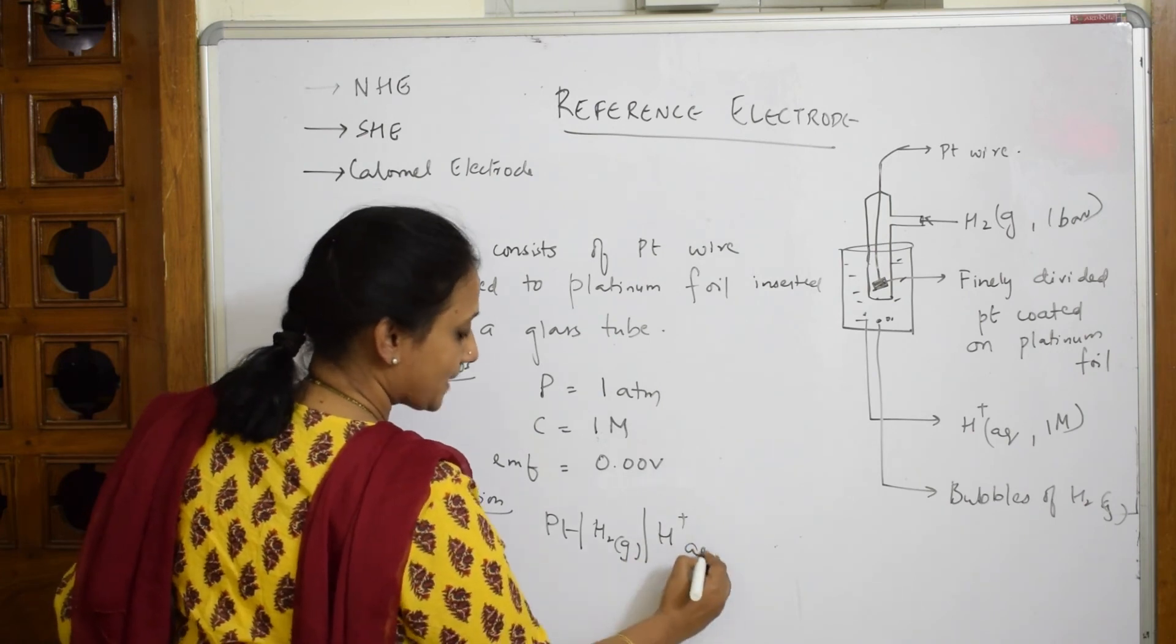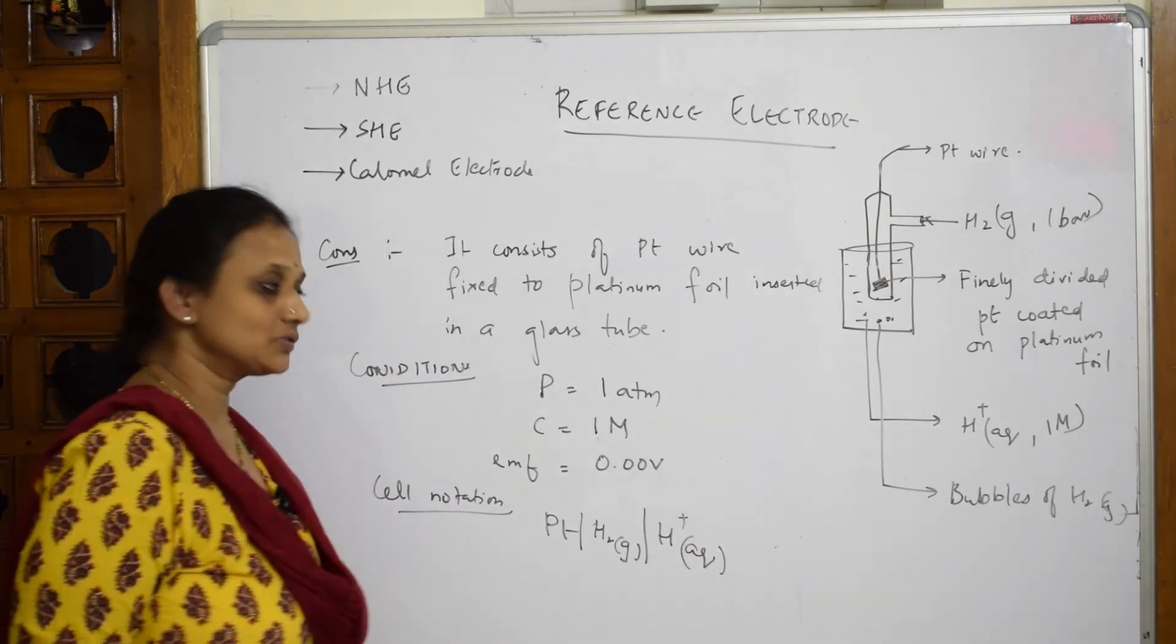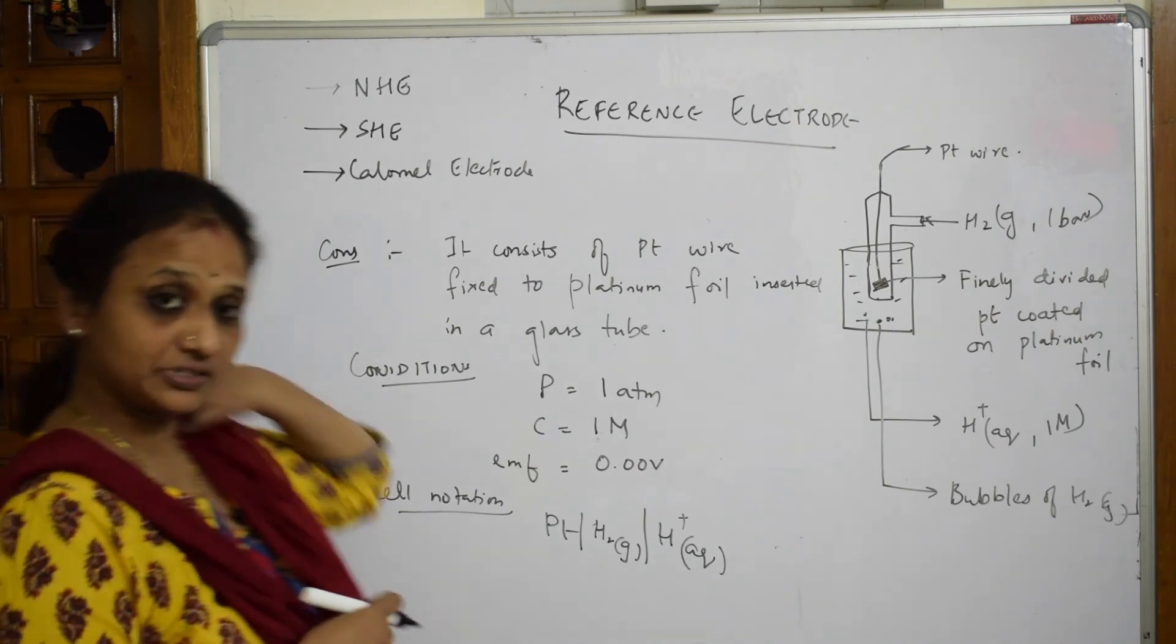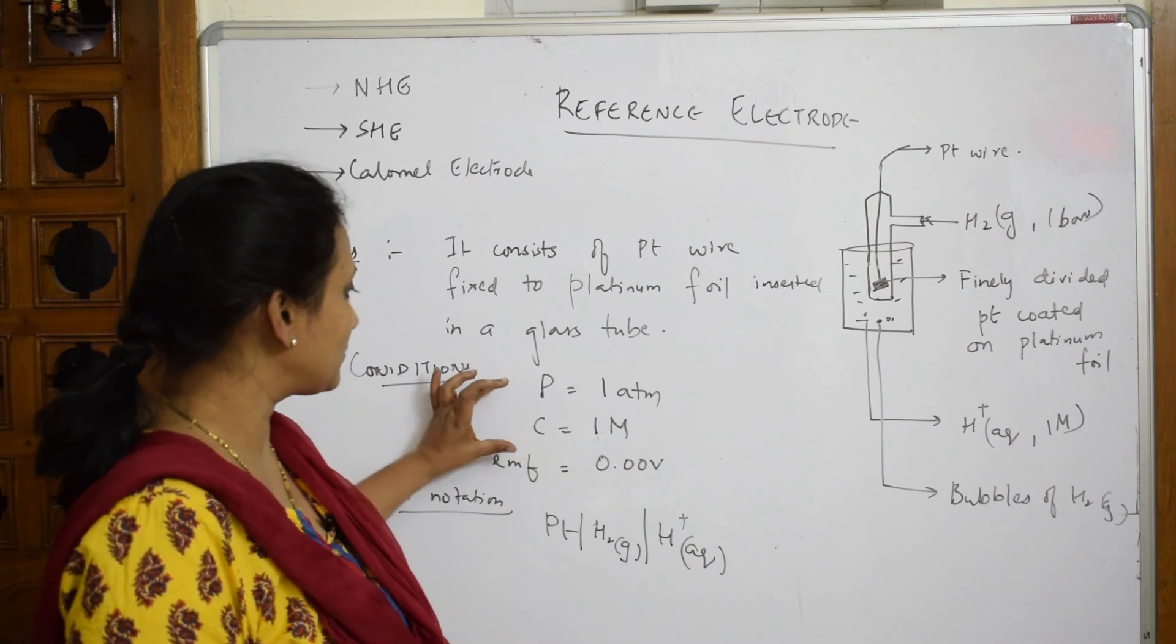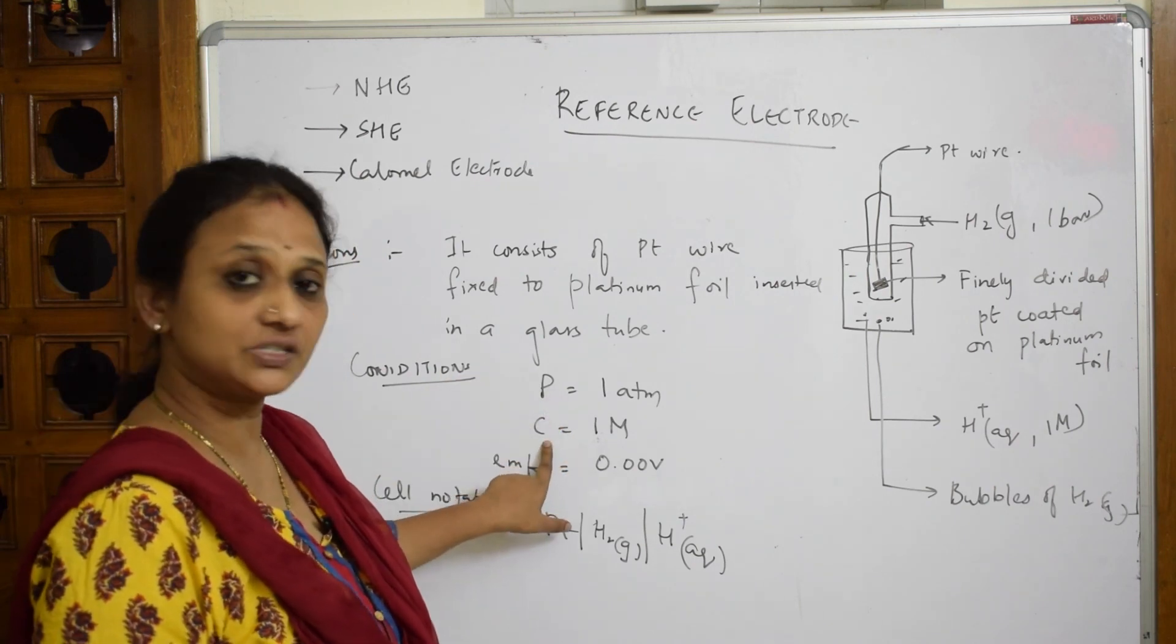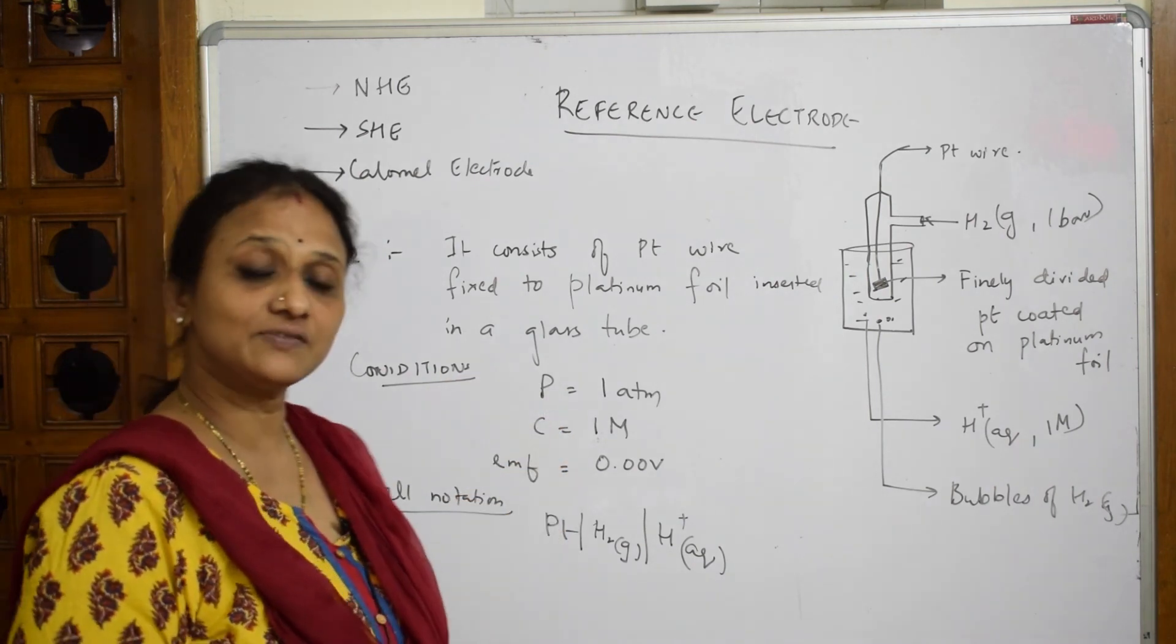This is how you write your reference electrode. I will use the same concept in the numericals and you will have a clear idea. Important things are pressure, concentration, and the EMF of the cell.